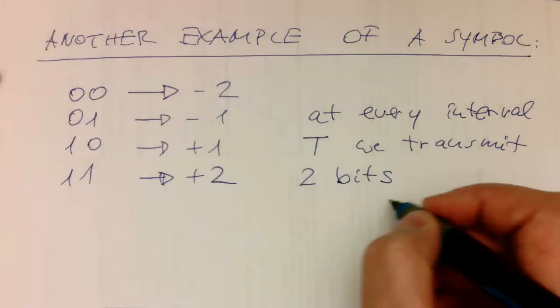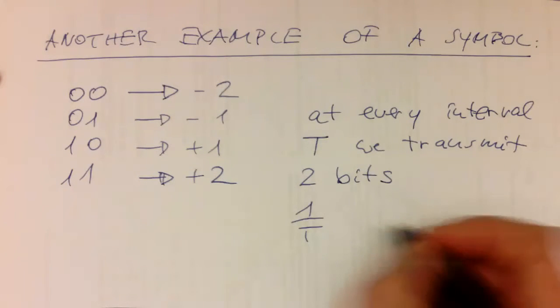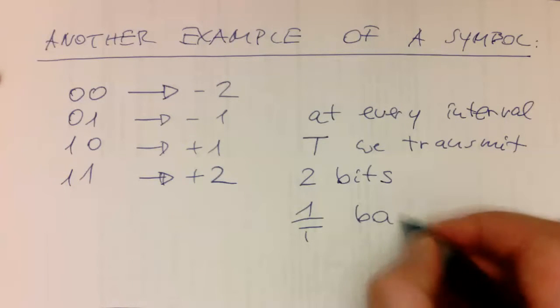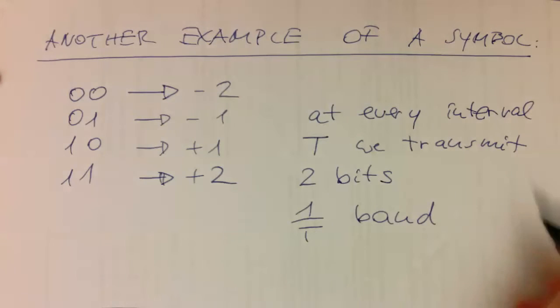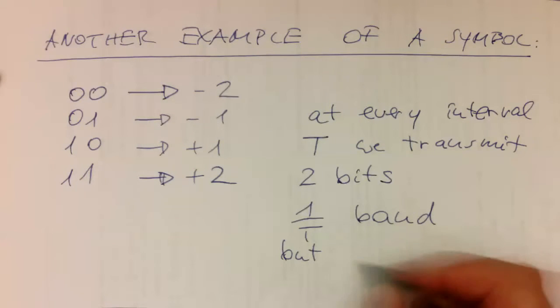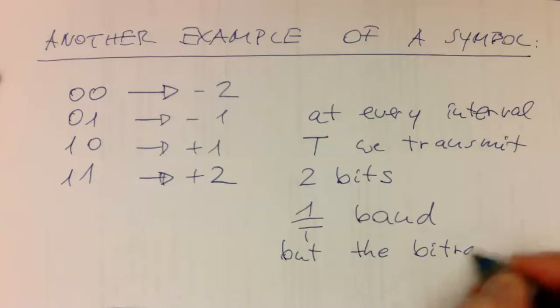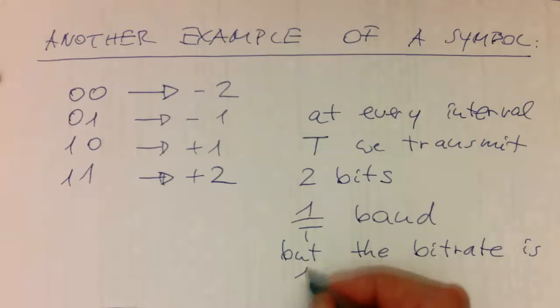This means we still have one over T baud, but the bit rate is one over T multiplied by two.